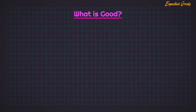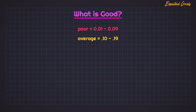If you're wondering what is considered a good number for XG — while not exact — I would consider a poor shot to be anything from 0.01 to 0.09. An average shot would be 0.10 to 0.19. A good one would be 0.2 to 0.3. And anything in the 0.4 range and above is going to be excellent.